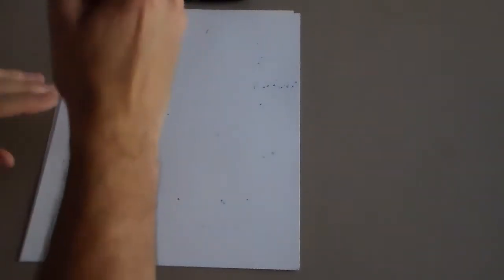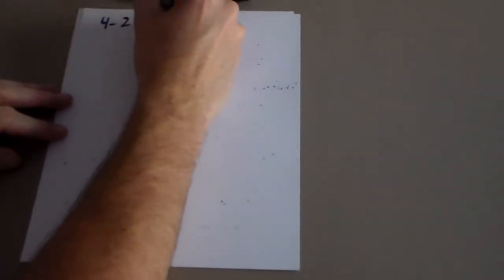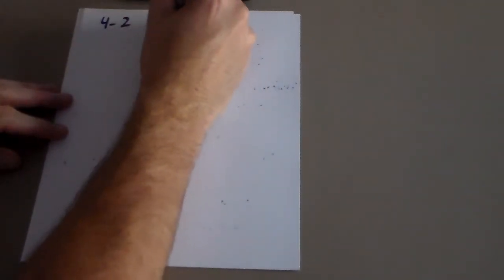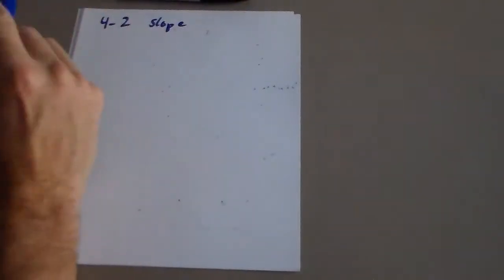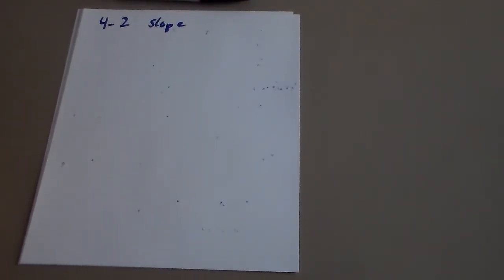We're back for our follow-up video on section 4 on slope. The slope of a line is the rise over the run — the difference of the y-values divided by the difference of the x-values.